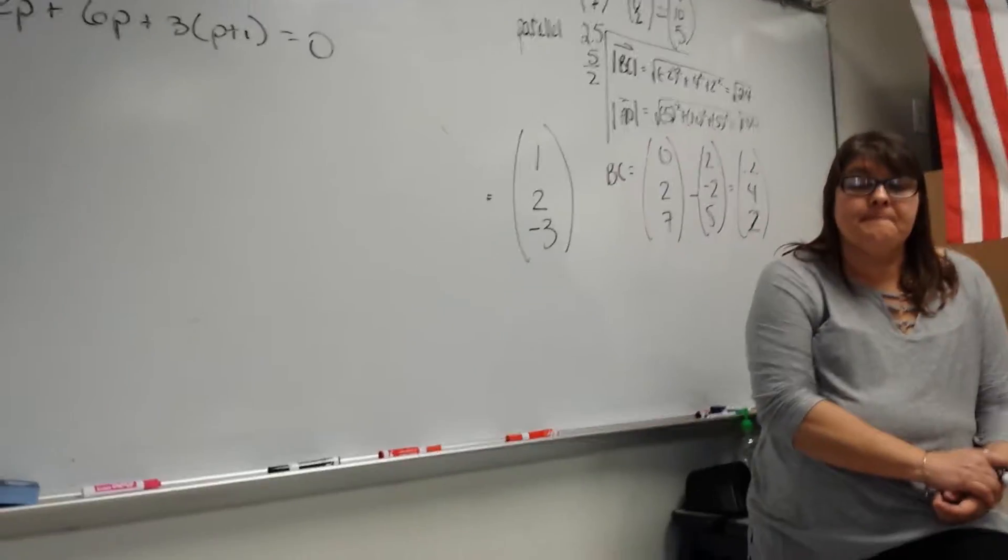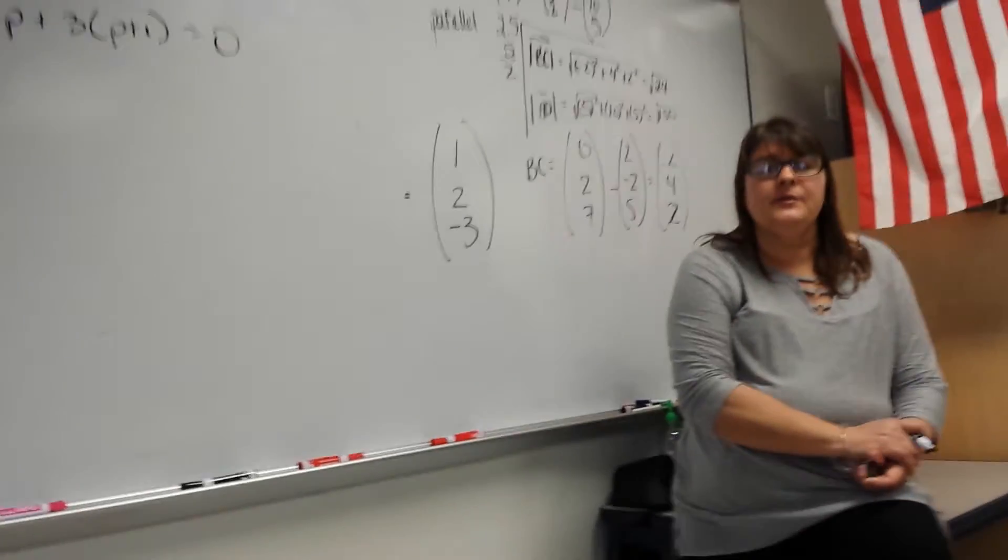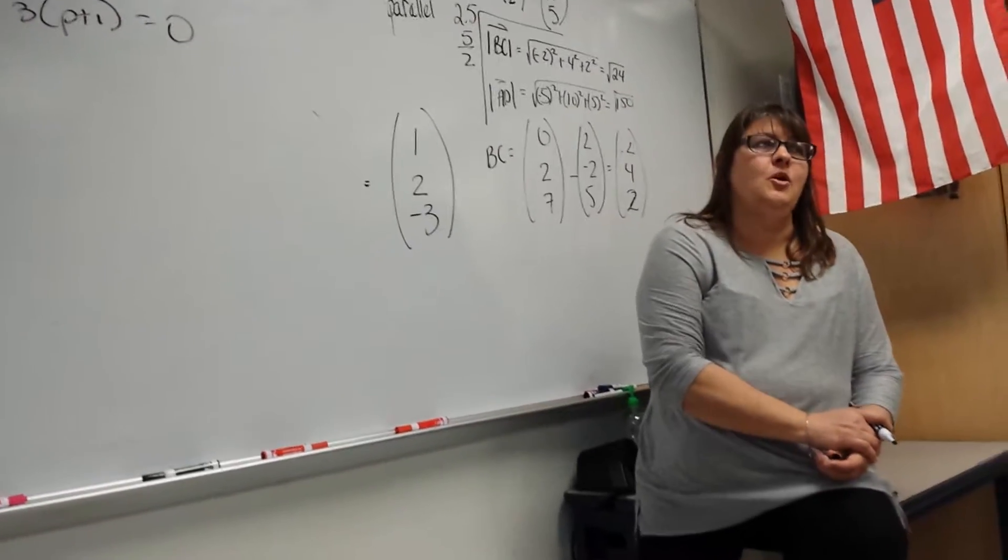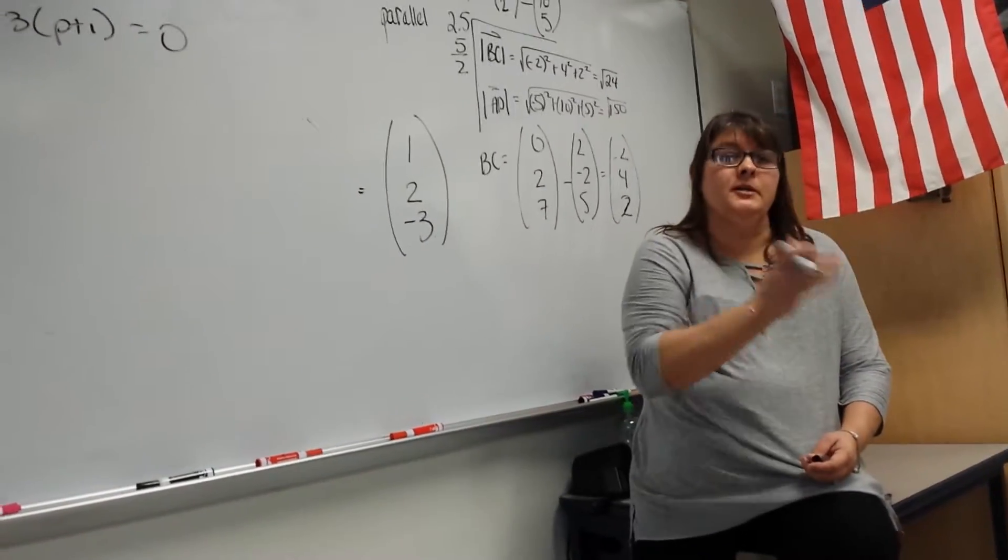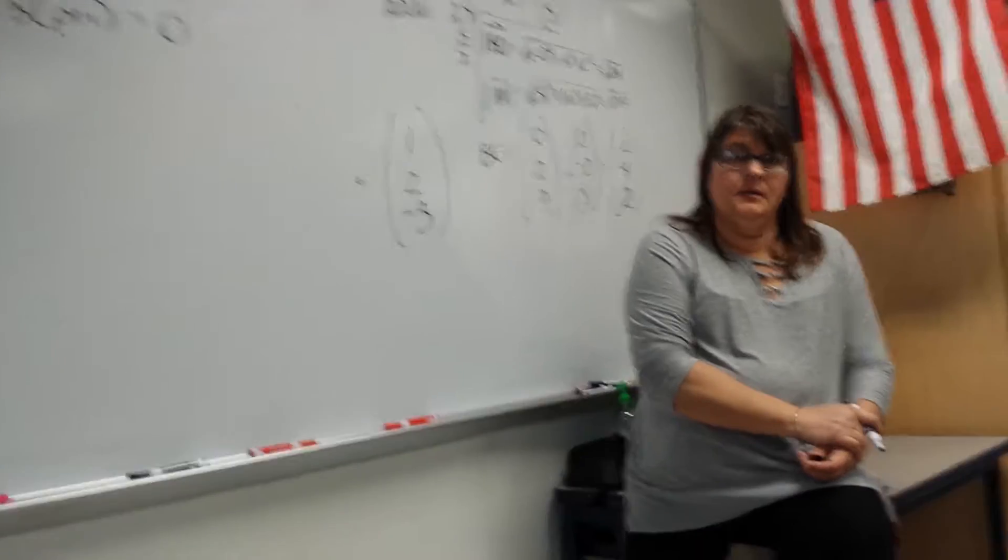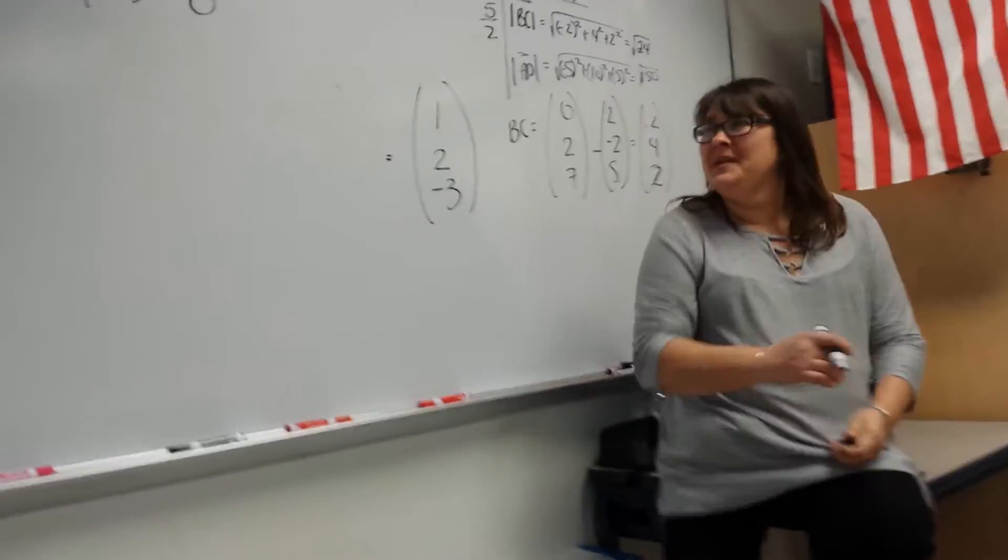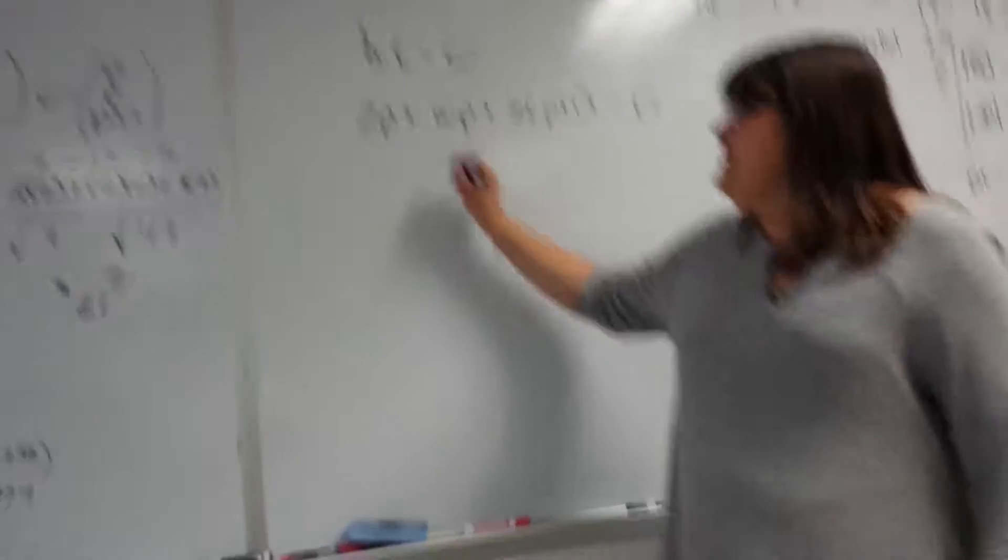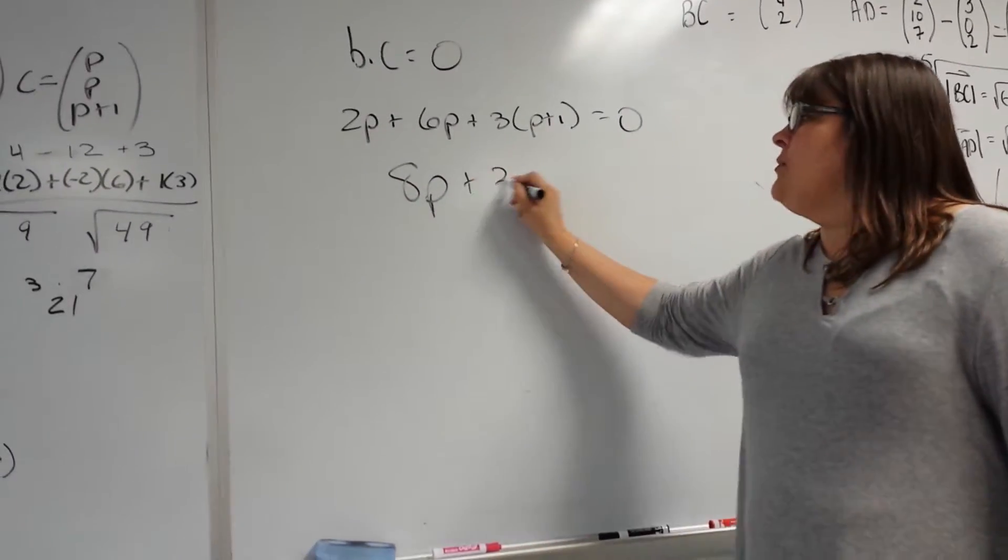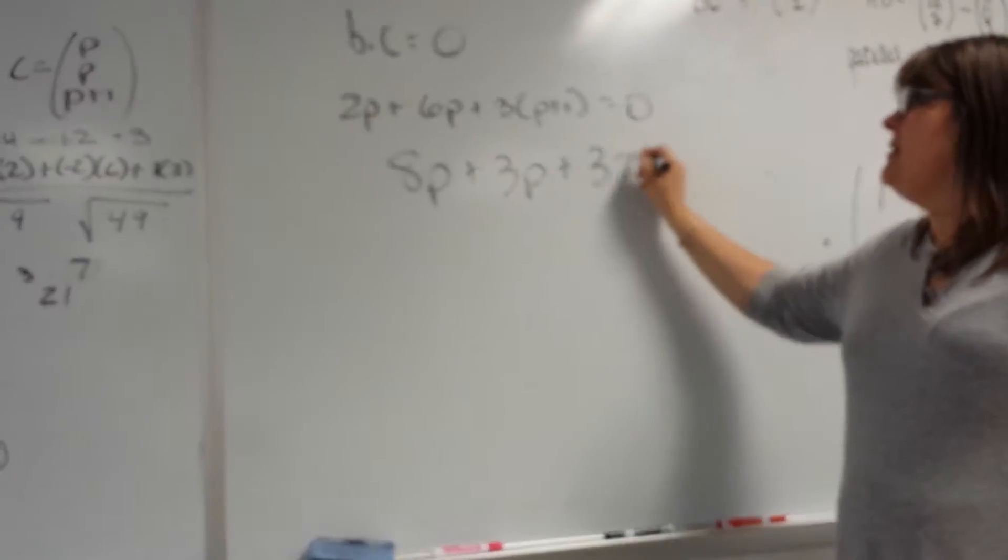What if you're proving whether or not they're parallel? Parallel, the only thing you're going to do for parallel is to show that you have an equal ratio of multiplication all the way across. And that was like what you did with that other problem? Yes. Cool. So, what do we get? Here, I see 8P plus 3P plus 3 is 0.